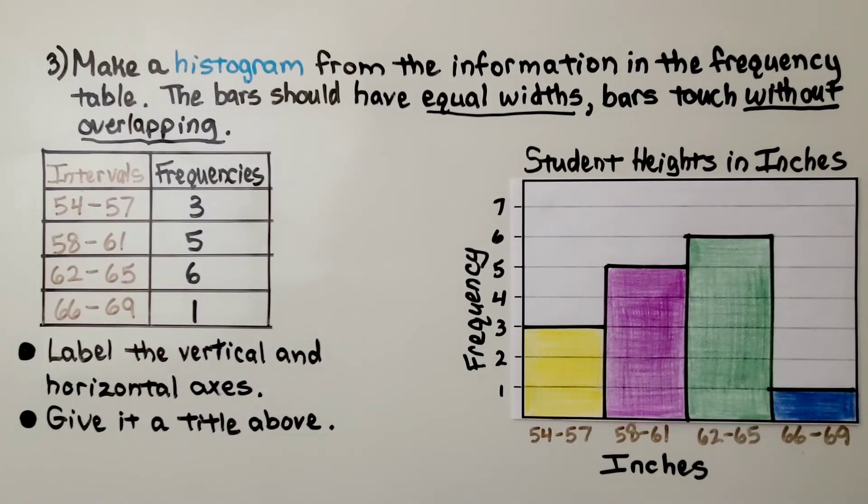And what would happen to our histogram if someone that was 53 inches or somebody that was 70 inches joined the classroom? What would happen to our histogram? Well, we would have to add another bar with another interval for that student.